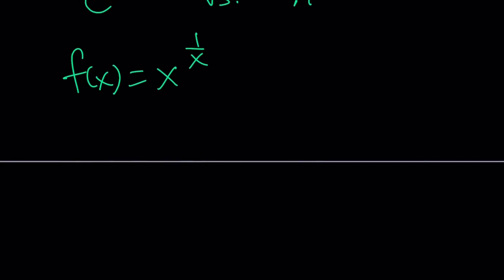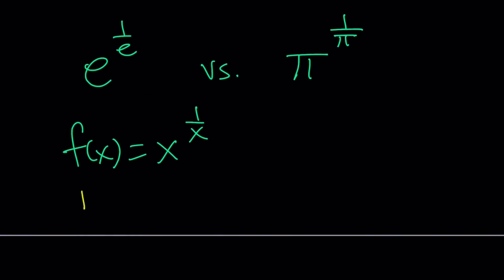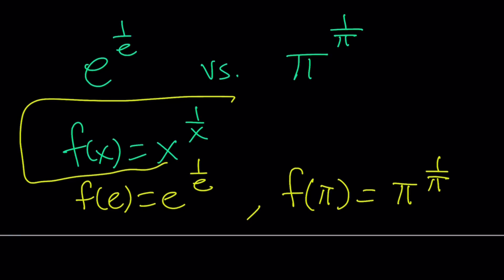Now, what do we do with this? We can go ahead and evaluate our function at two points, one of which is going to be f(e), which is e to the power 1 over e, and the other one is going to be f(π), which is π to the power 1 over π. So if I can understand the behavior of this function, if it's always increasing or decreasing, or if it has a minimum or maximum, then I can compare these two numbers. And I'll show you how on the graph.